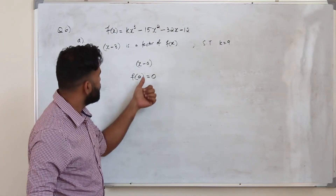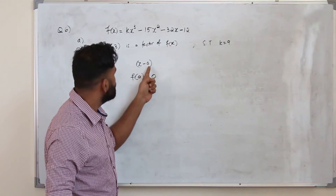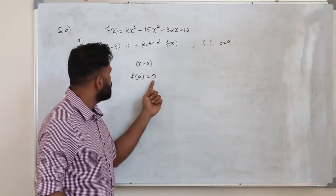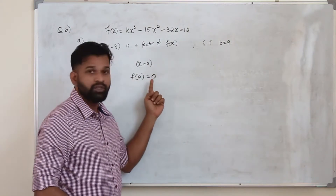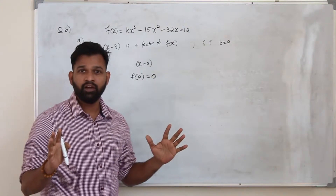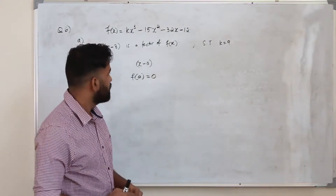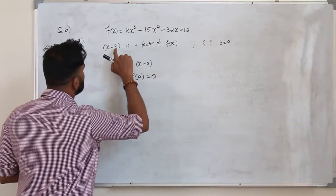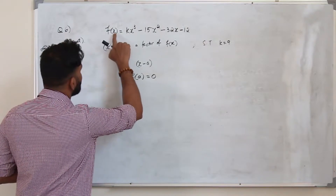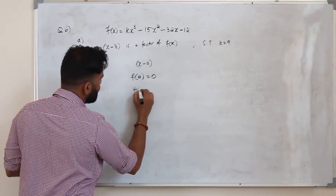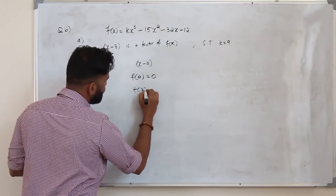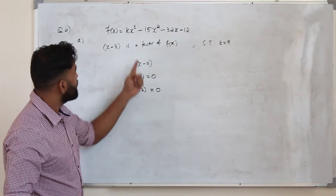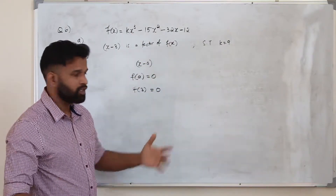f of a means replace x by a. In this case, replace x by 3, so your remainder will be 0. You are not supposed to use the long division method. When you replace x by 3, it's f of 3 equals 0. Replace x by 3 and solve for k.